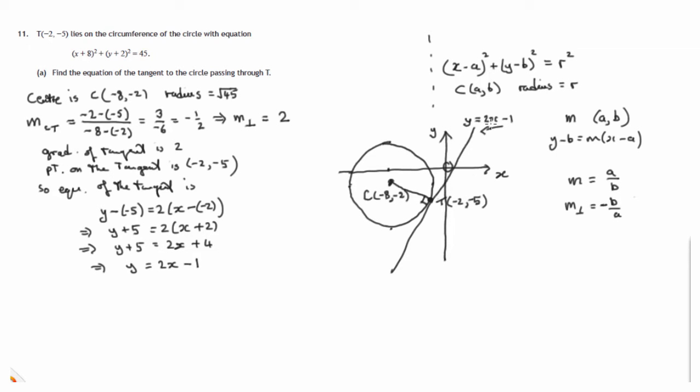So this tangent line has equation y = 2x - 1. Now does that make sense? Gradient of 2 looks okay. 1 along, 2 up, roughly okay. And crossing the y-axis at -1, again, that seems to make sense. Okay, that's part A.